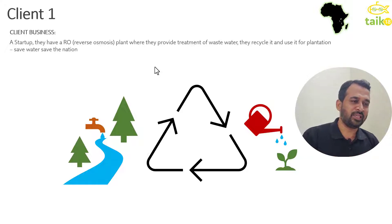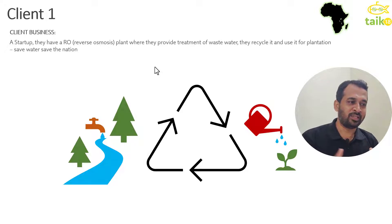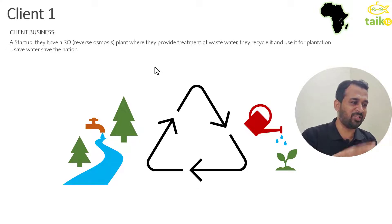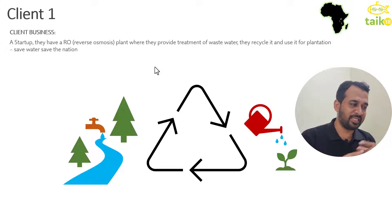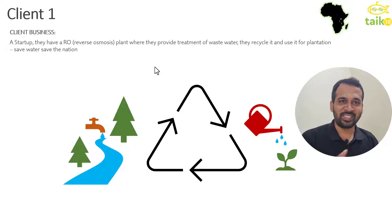The first client is a startup company that has an RO plant, which is reverse osmosis. They treat wastewater and convert it into clean water so that it can be reused for plantations. As you can see in the image here, they recycle waste water and reuse it for plantation. The motto is: save water, save the nation.